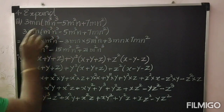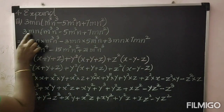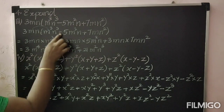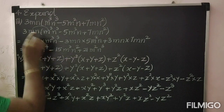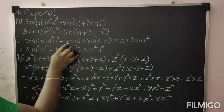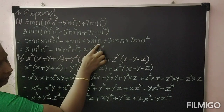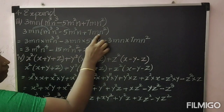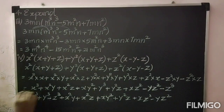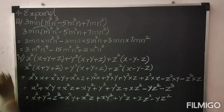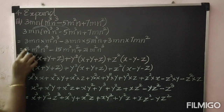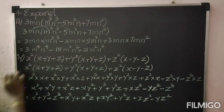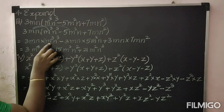Now we are going to multiply each and every term in the bracket by 3mn. So: 3mn into m³n³ — here you have minus — minus 3mn into 5m²n, then plus 3mn into 7mn². Multiply now: 3 ones are 3, m into m³ gives m power 4, n into n³ gives n power 4.